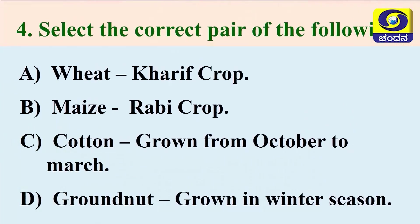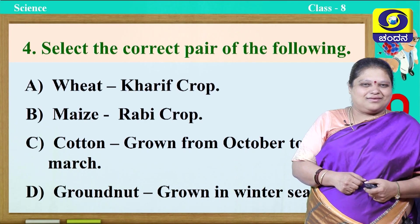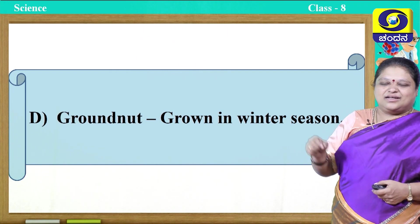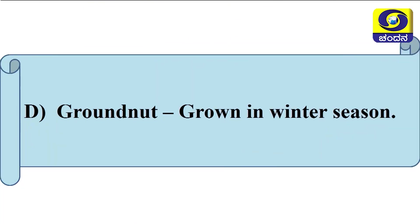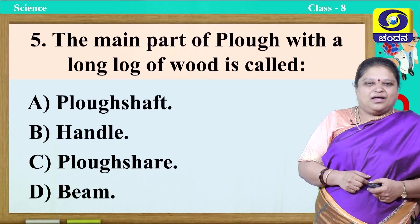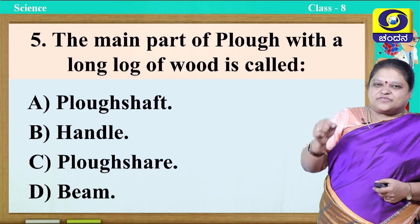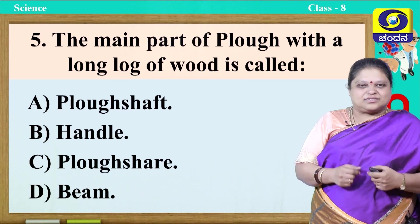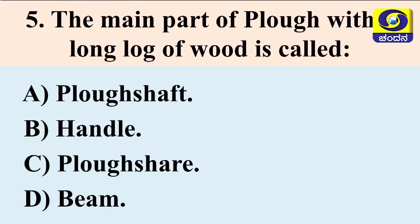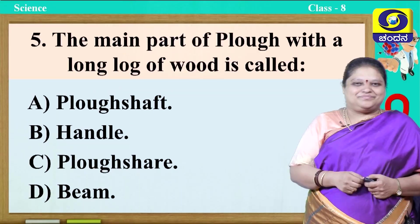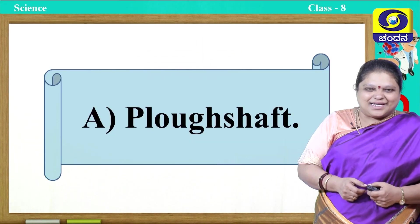Next one, select the correct pair of the following: wheat-Kharif crop; maize-Rabi crop; cotton-grown from October to March; groundnut-grown in winter season. Think and answer. The correct answer is groundnut — it is grown in winter season; remaining everything is wrong. Next, the main part of the plow with a long log of wood is called: plow shaft, handle, plow share, or beam? The correct answer is plow shaft.